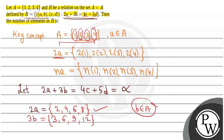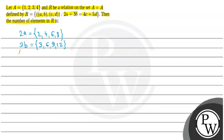We can use 4C and 5D to make those sets as well. Our 4C set equals 4 multiplied by elements of A: 4×1=4, 4×2=8, 4×3=12, 4×4=16. Then the 5D elements are: 5×1=5, 5×2=10, 5×3=15, 5×4=20.